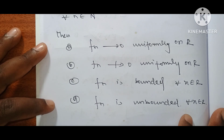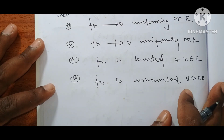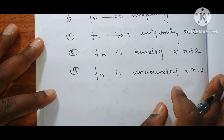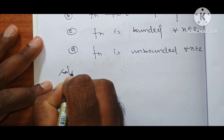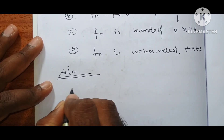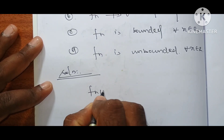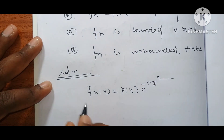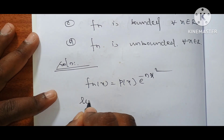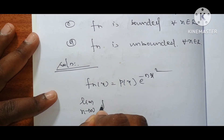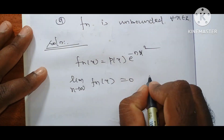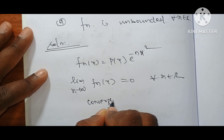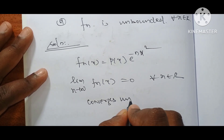We need to check whether it converges, and if so, whether the convergence is uniform or not uniform, and whether it is bounded or unbounded. For the solution, note a shortcut: f_n(x) equals some polynomial function times e^(-n·x²). Taking the limit as n tends to infinity of f_n(x) gives 0 for every x belonging to R.